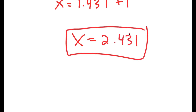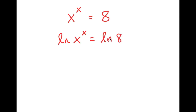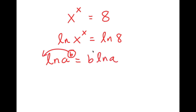Which is equal to 2.431. So this is my answer. In this next part, we're going to be solving the equation x to the power of x is equal to 8. At first glance, this problem may look challenging. To solve this, I'm going to first start by taking the ln or natural log on both sides. So I get ln x to the power of x is equal to ln 8. Using the property that if I have ln a to the power of b, I can move the exponent to the front, so this turns into b times ln a. I can move x to the front. So now I get x times ln x is equal to ln 8.